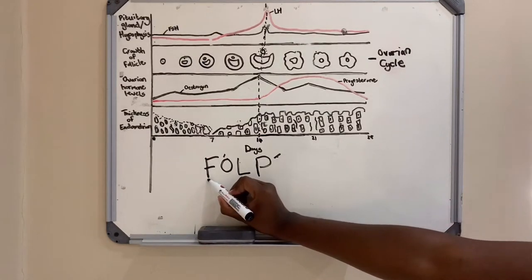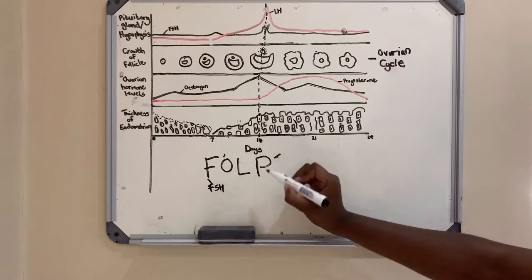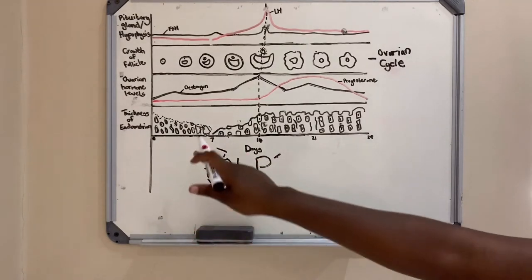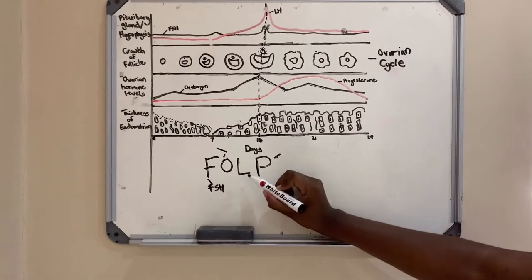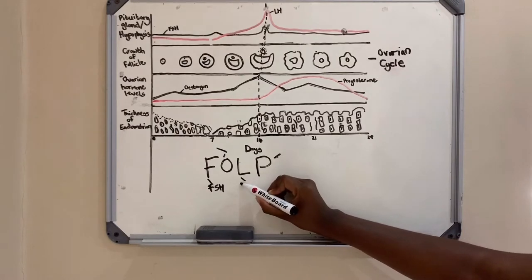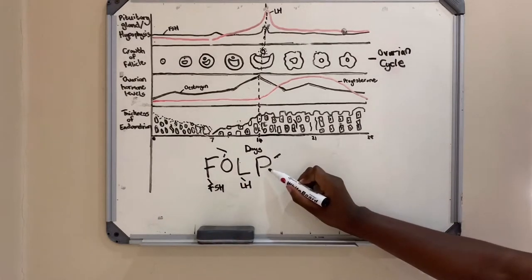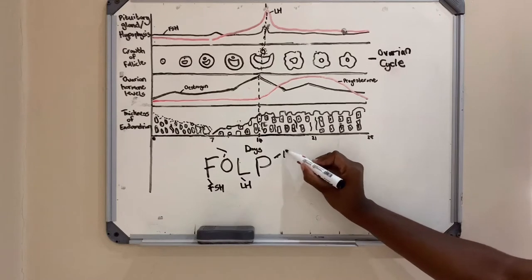I'm going to start off with FSH. F stands for FSH, O stands for estrogen, L stands for LH which is the luteinizing hormone, and FSH is the follicle stimulating hormone. P is progesterone.